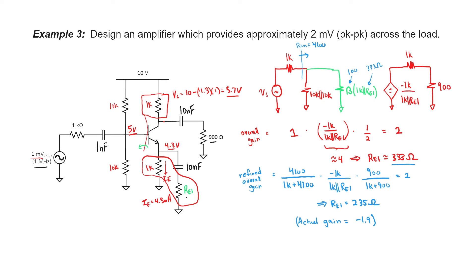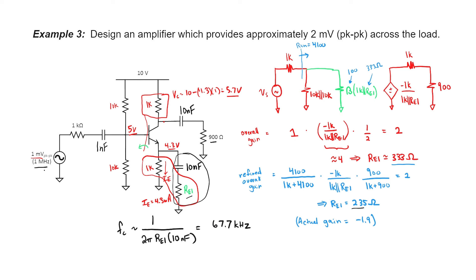My smallest R down here is 235 ohms, but my load is 900 ohms. If I check the corner frequency of this branch and it's safe, then the 10 nanofarad choice will also be safe elsewhere. Plugging in my choice for RE1, I find the corner frequency is about 67.7 kHz. That's quite a bit below my working frequency of 1 megahertz, so we're fine. The corner frequency for the other branch would be even lower — no problem.